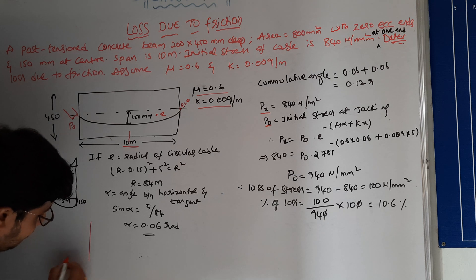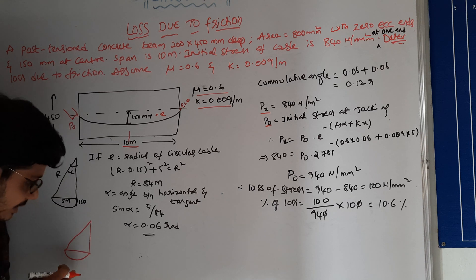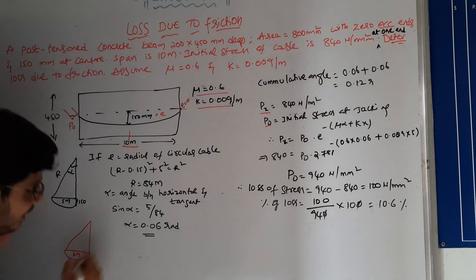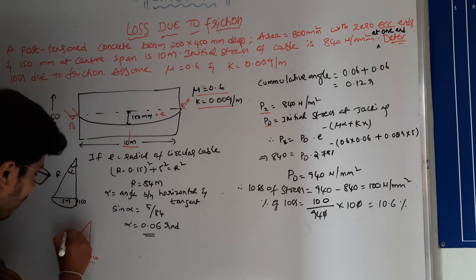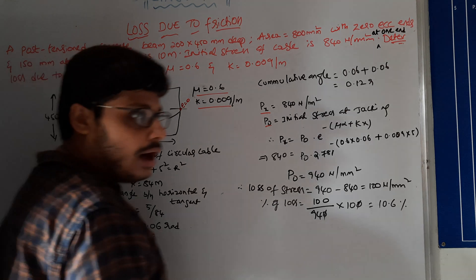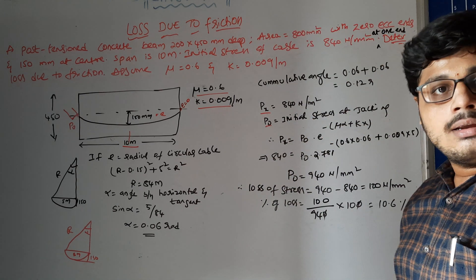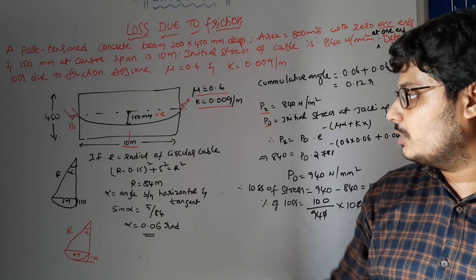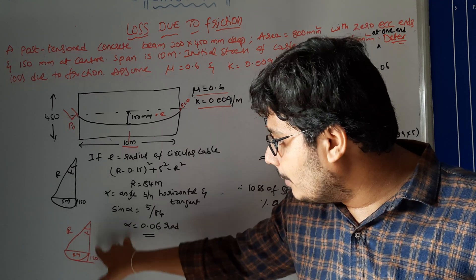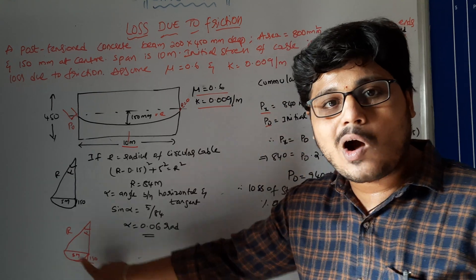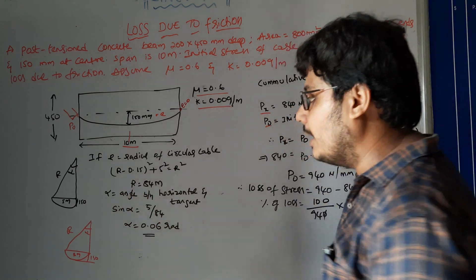For the half span, the cable profile is semicircular. Taking L/2 = 5 meters and eccentricity = 150 mm (0.15 m), we form a right triangle. The hypotenuse is radius R, one side is 5 meters, and the remaining side is R minus 0.15 meters. Using the Pythagorean theorem — R² = 5² + (R − 0.15)² — solving this gives R equal to approximately 84 meters.